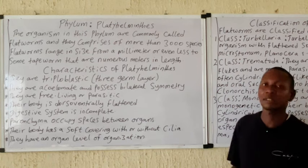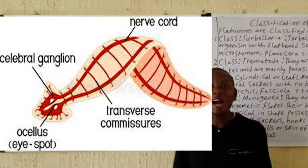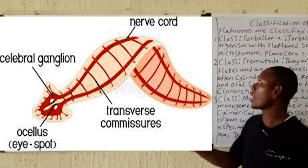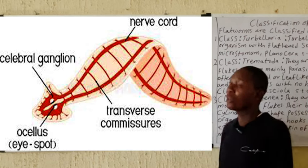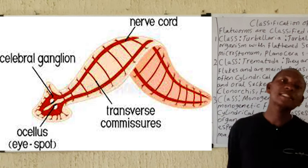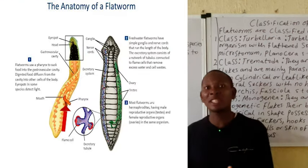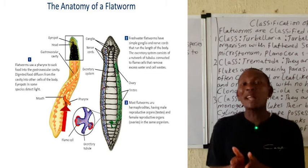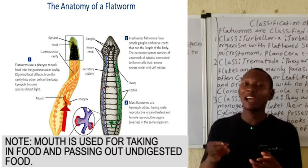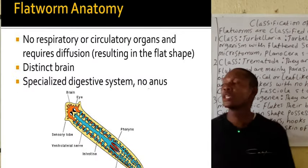The organisms in this group are also virtually flattened — they are actually flattened, which is the reason they are given the term 'flat ones.' They possess an incomplete digestive system, meaning they have one opening to the external environment, which can be used for both ingestion and ejection.